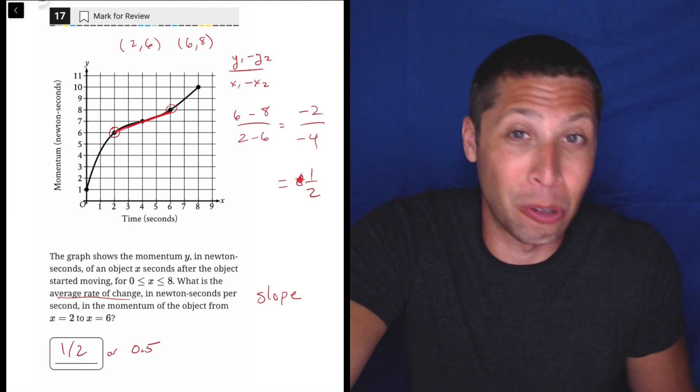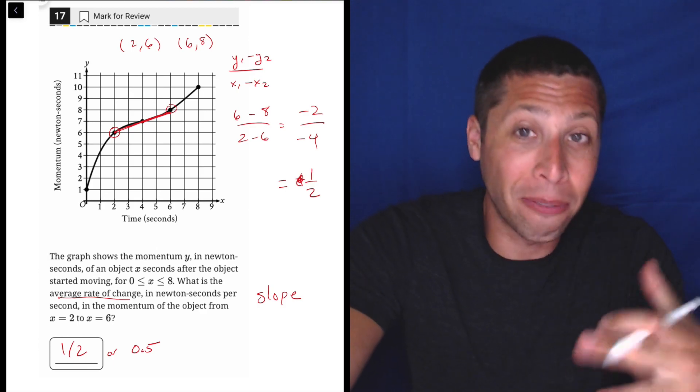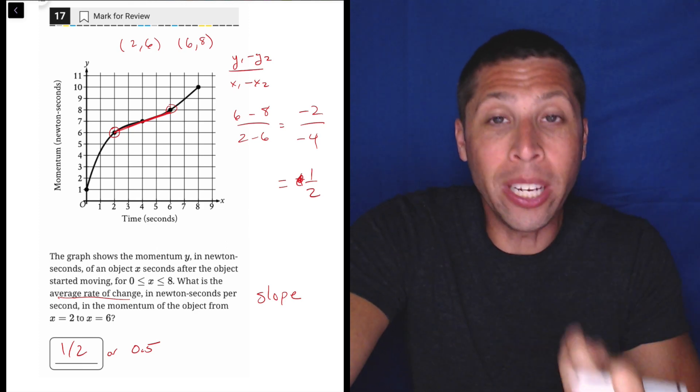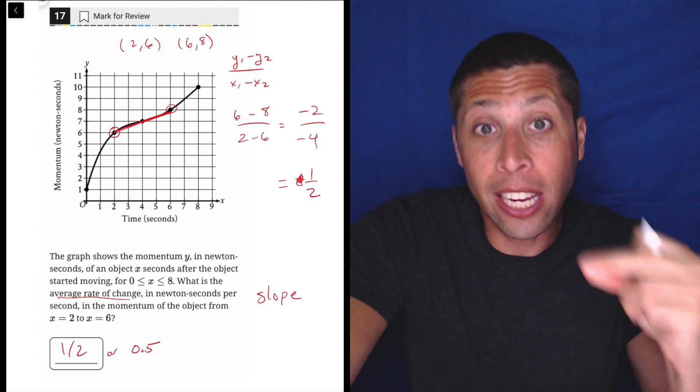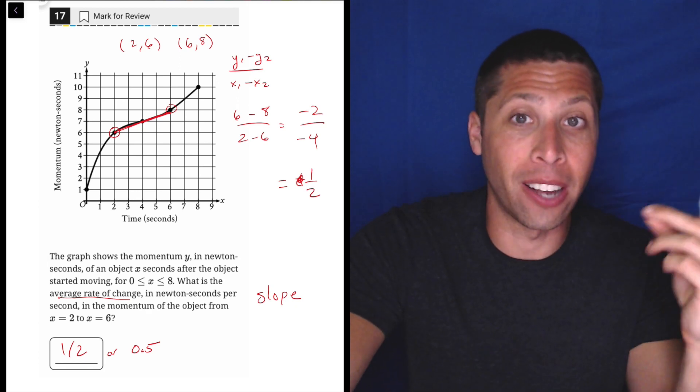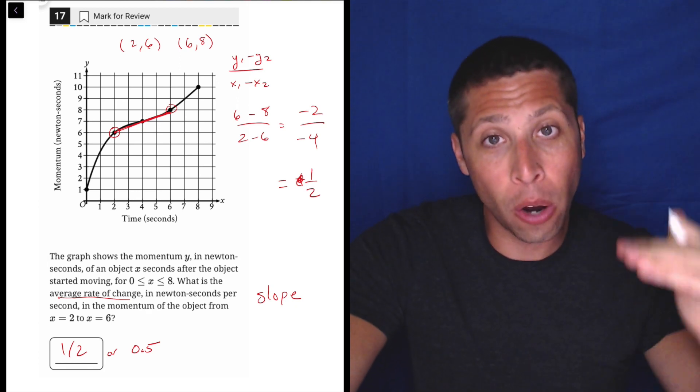Some people don't know the times tables well enough, and maybe you get 8 times 4 and 9 times 4 confused all the time. So every time you have to do one of those, just think it through. Take that extra pause and really try to emphasize checking your work as you go when you do those kinds of steps.